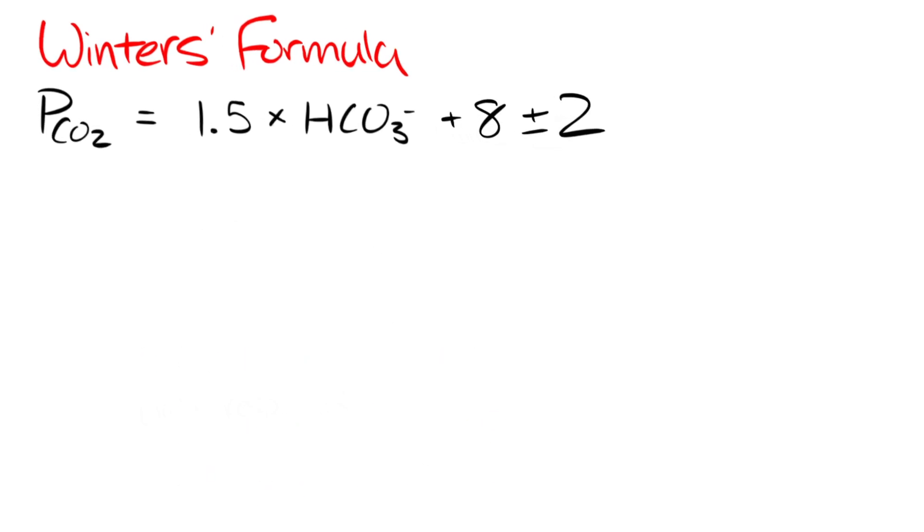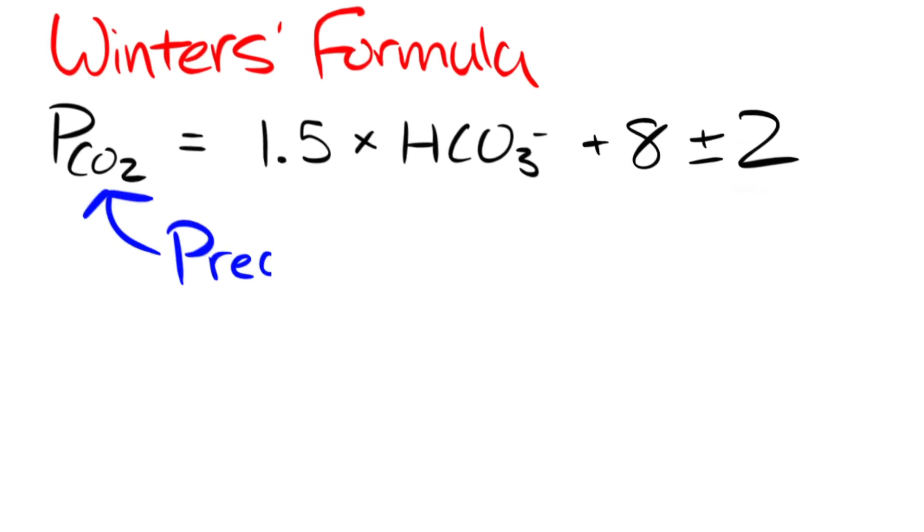So let's look at the formula itself. On the left is the PCO2. This is the predicted PCO2 for a pure metabolic acidosis and this is the output of our formula. The only input to the formula is going to be the bicarb here in the middle and that's the measured bicarb.